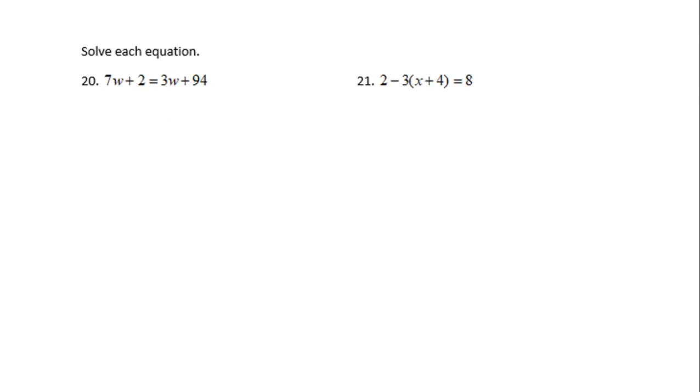Let's take a look at two more problems. Number 20 says 7w plus 2 equals 3w plus 94. In this equation we have variables on both sides: 7w on the left side, 3w on the right side, and numbers obviously. You can do this problem in many ways. I personally like to eliminate the variable first.